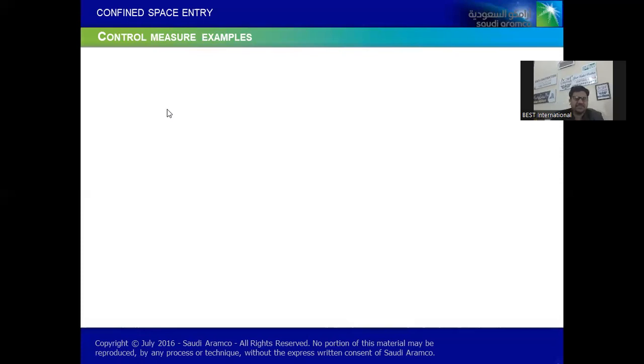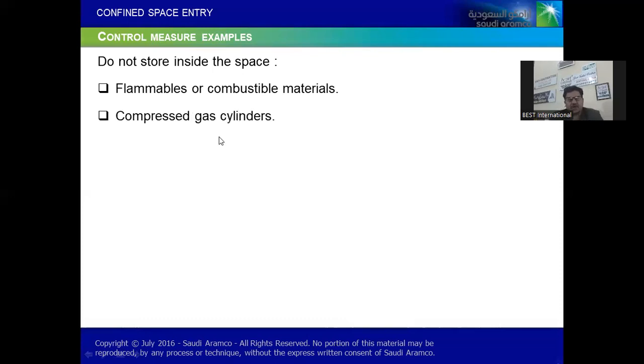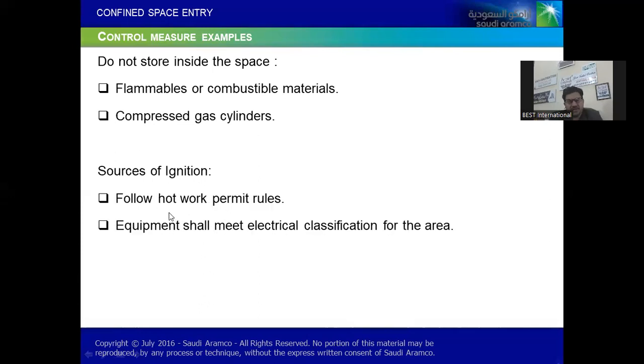Let's take an example. First of all, do not store inside the confined space what we should not store - flammable or combustible materials we should not store inside the confined space. And then compressed gas cylinders, especially I call them ticking bombs as well. Sources of ignition - follow hot work permit rules. And equipment shall meet electrical classification for the area. And most importantly, fire protection equipment available and also ground air moves to prevent static build up.